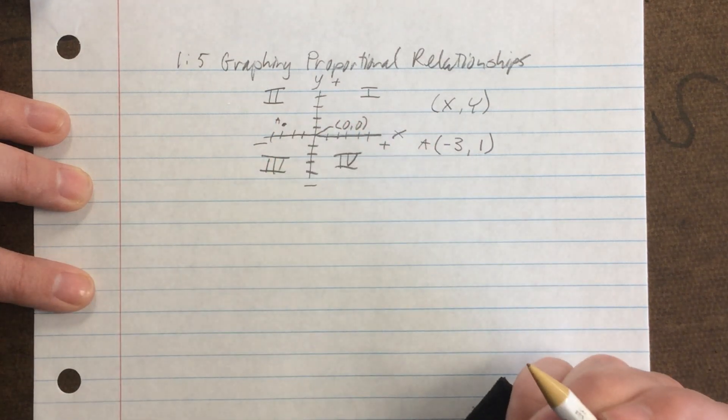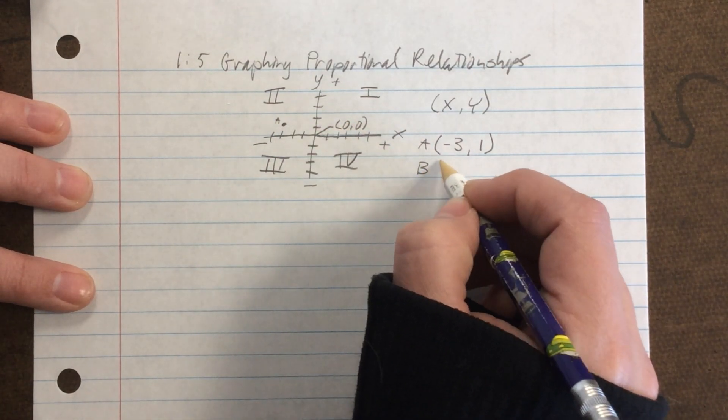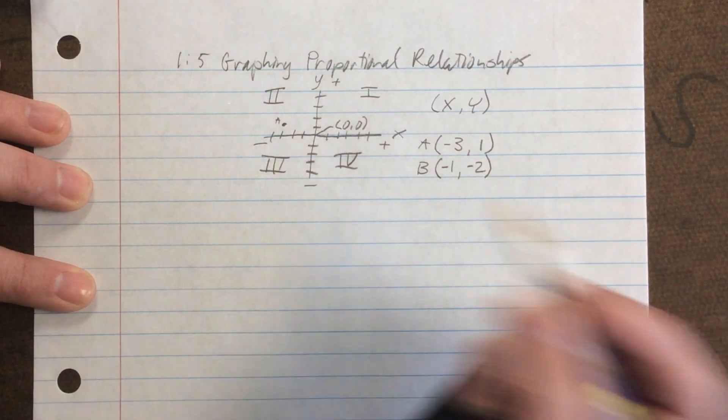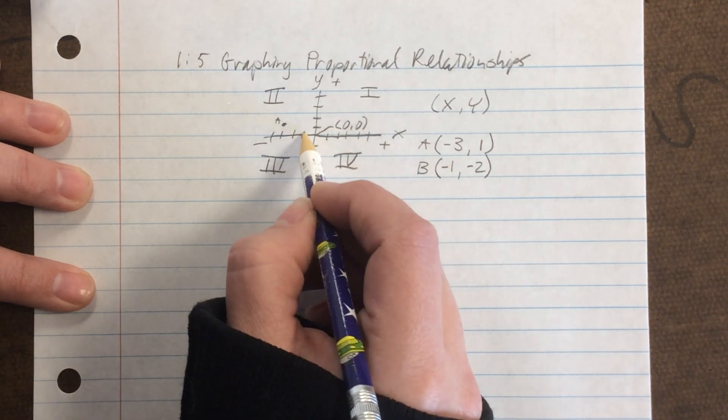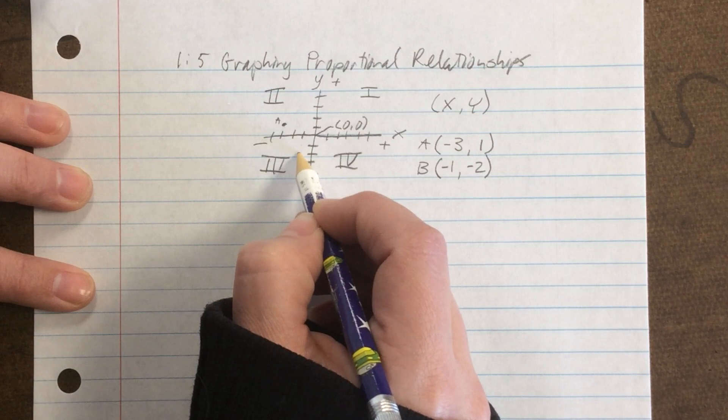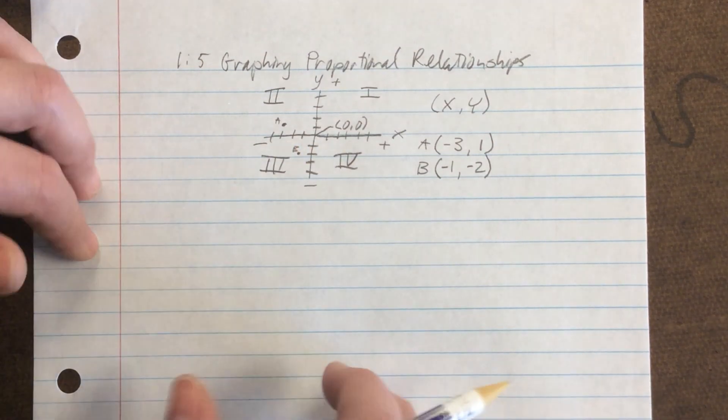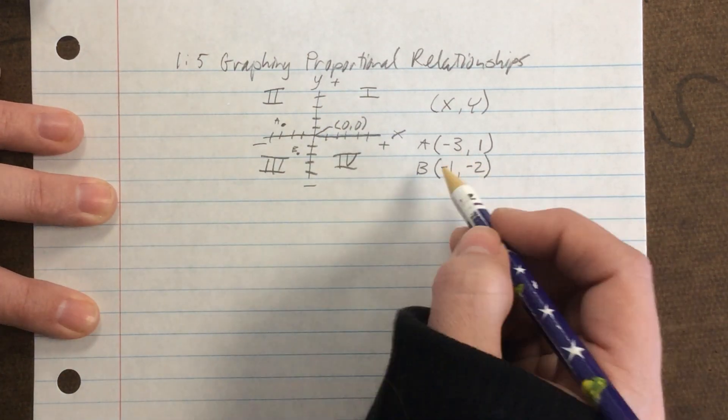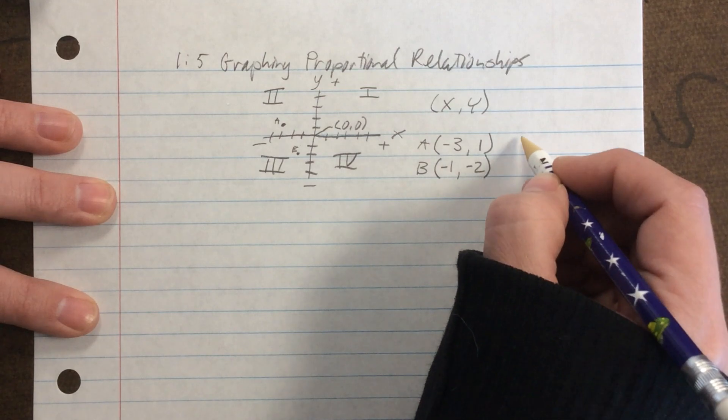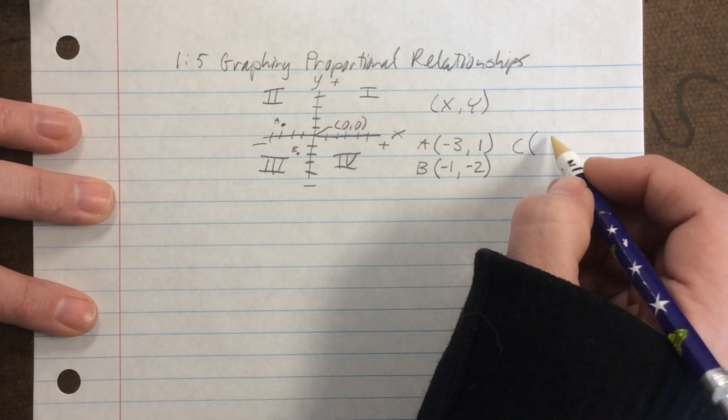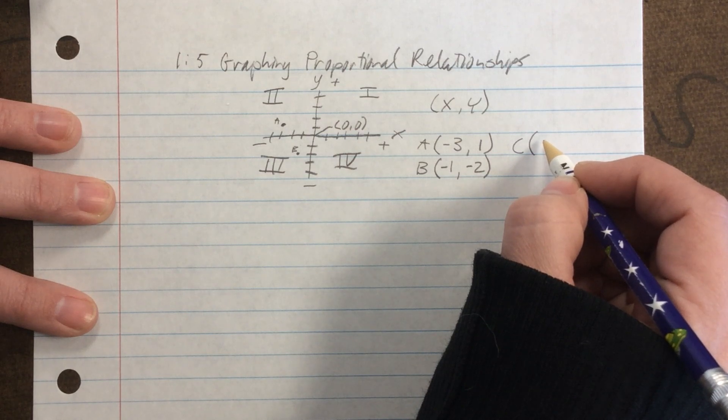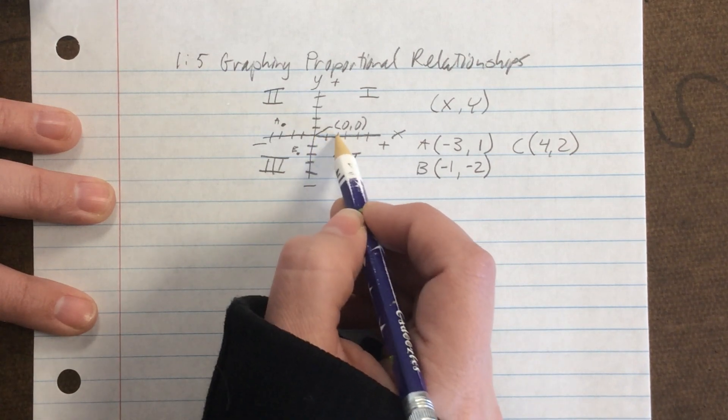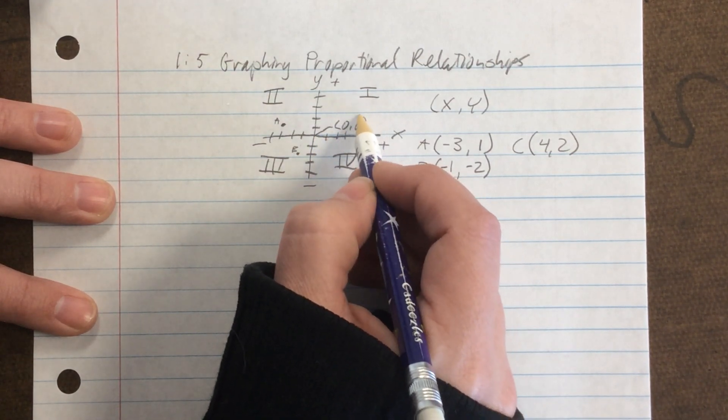And then we can do the point, we'll call this one B, and we'll do negative one, negative two, which means we're going to have a negative x, and then negative y, so we're going to go down two, and put the point right there. Now, on your assignment today, you're only going to be dealing with quadrant one, with the positive numbers. So we'll practice one over there. Point C, let's call this one, how about four, two? So that means we're going to count over four, and then up two.